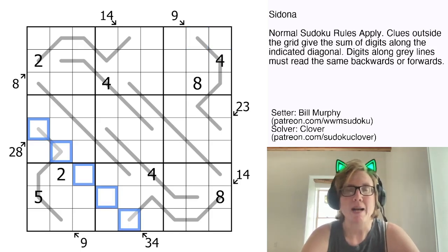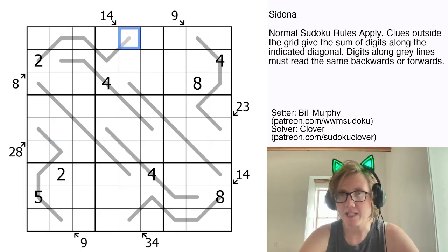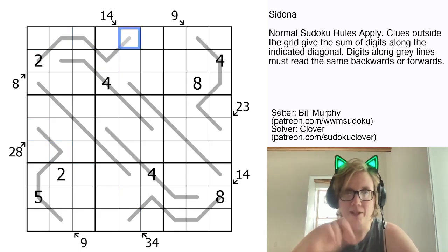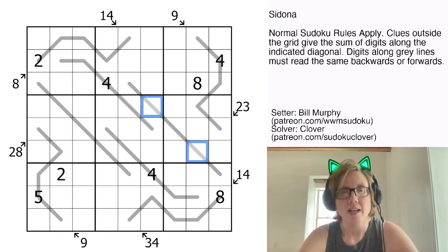Then finally there are also some palindrome lines, and the rule for those is that digits along a gray line have to form a palindrome. A palindrome is just a sequence of digits that's the same forwards and backwards. So this has to be the same as this, these two digits have to be the same, and so on. These two digits are the same, these two are the same, etc. All right, let's give it a try!